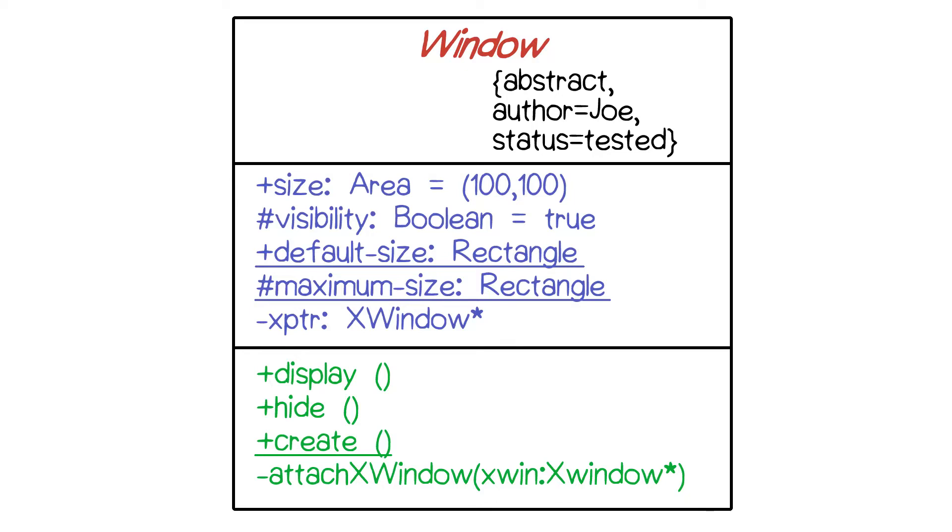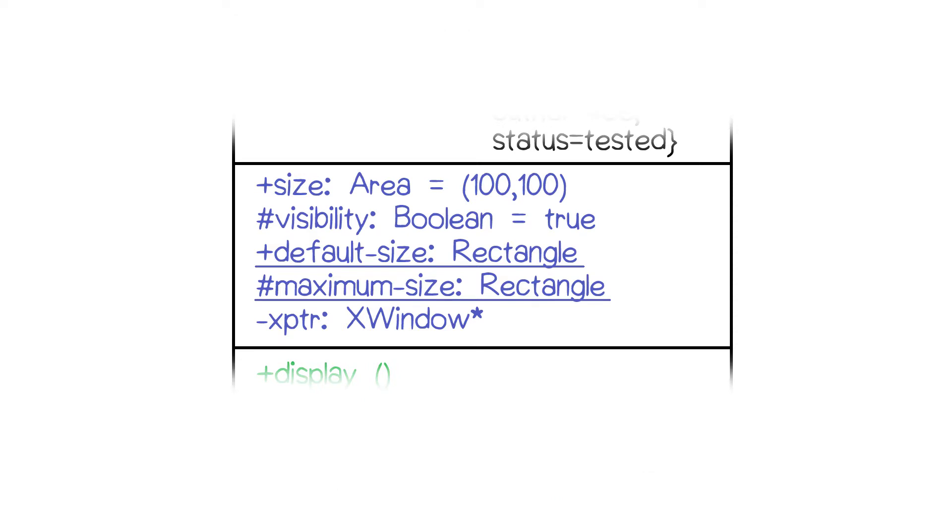Here's our example class again. Now let's look at the middle compartment, which is for purposes of describing attributes.